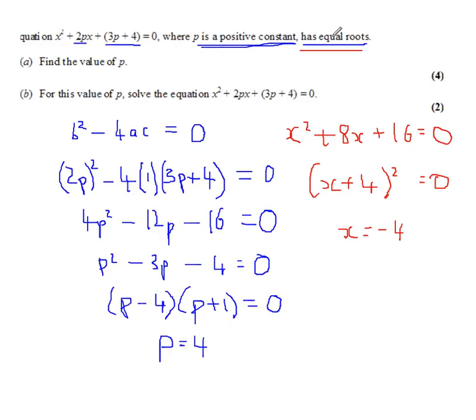If it has no real roots, then b squared minus 4ac is negative. And you'll get an inequality, same result of the inequality.